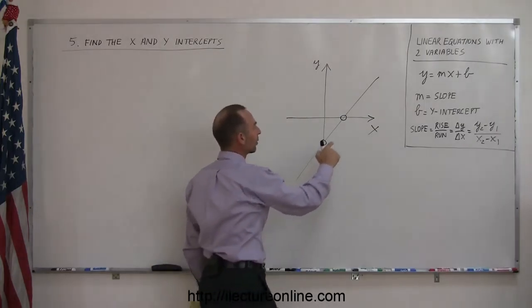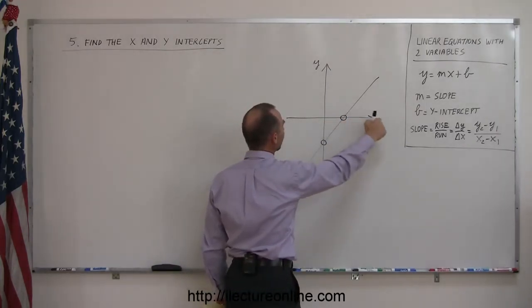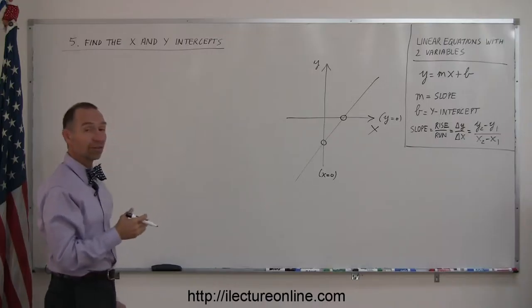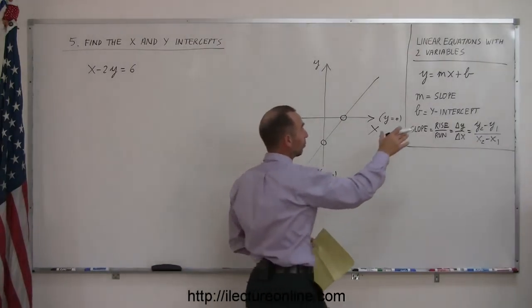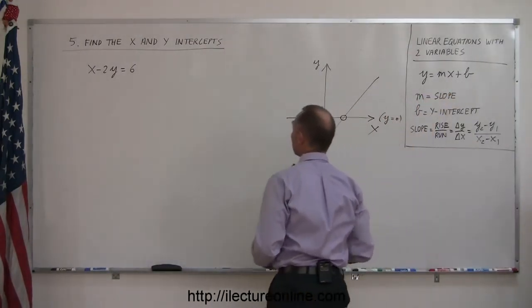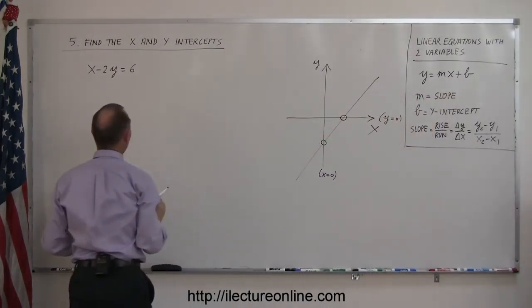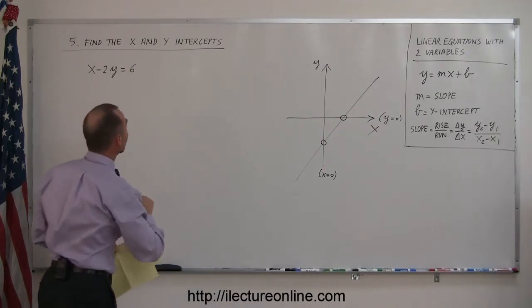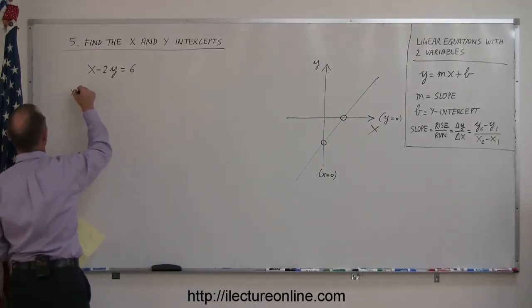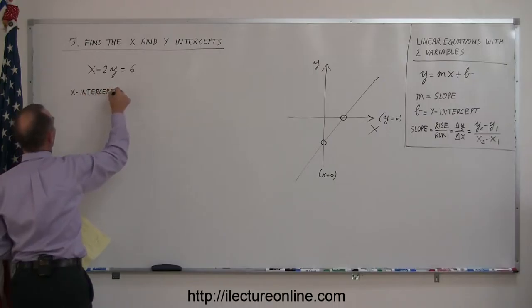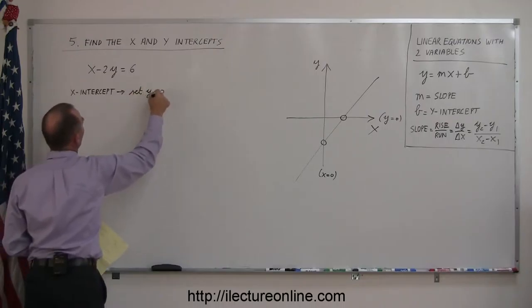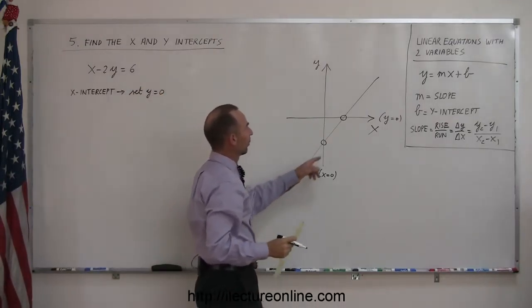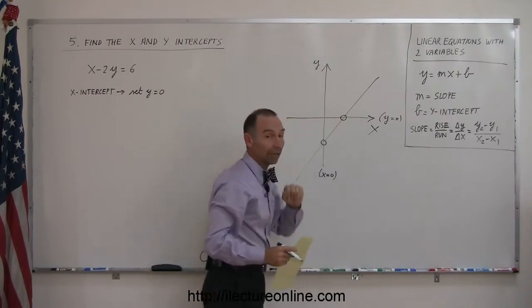Notice that whenever the line crosses the x-axis, that's where the y-value equals zero. Whenever the line crosses the y-axis, that's when the x-value equals zero. That gives us a hint. If we're going to find the x-intercept, we simply take the equation and set y equal to zero. If you want to find the y-intercept, we take the equation and set x equal to zero. So let's show you some examples of that.